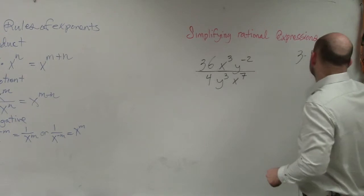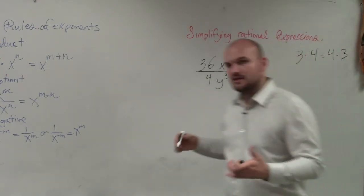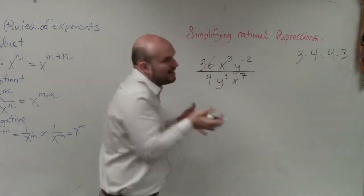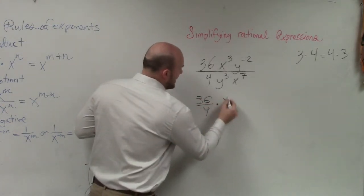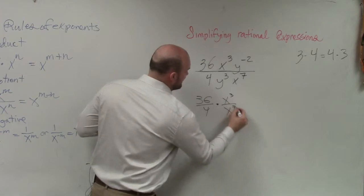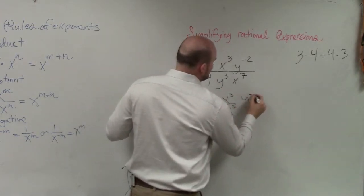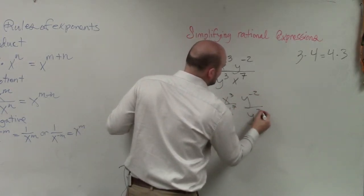Is 3 times 4 is the same thing as 4 times 3, right? So as long as you're multiplying, again, what I like to do is I like to arrange these with the same problem. 36 over 4 times x cubed divided by x to the seventh, and then y to the negative second divided by y cubed.